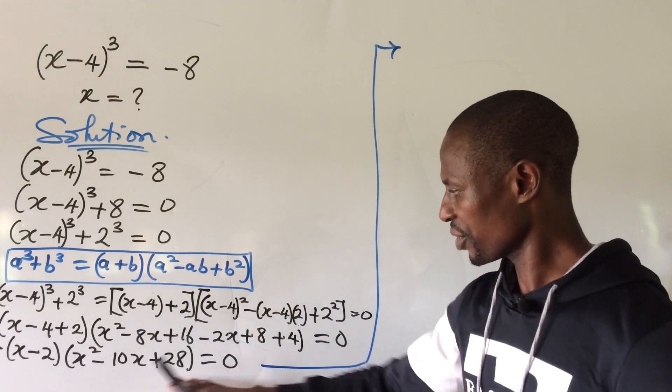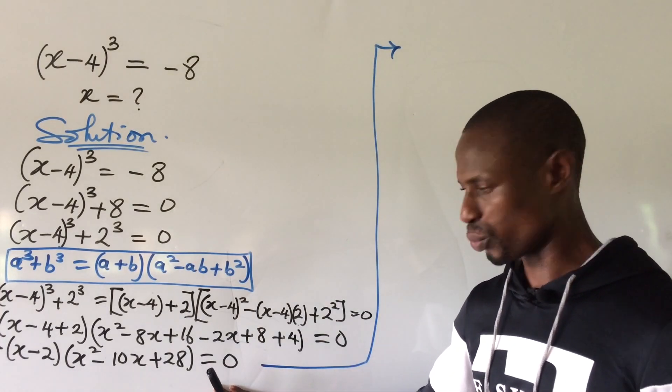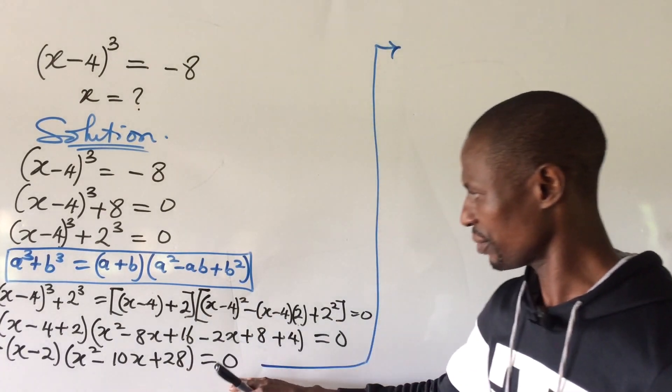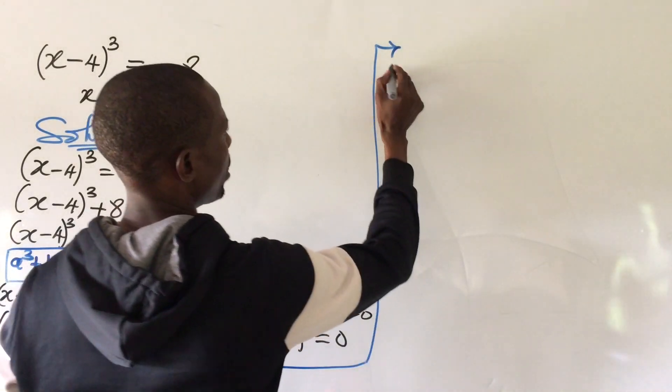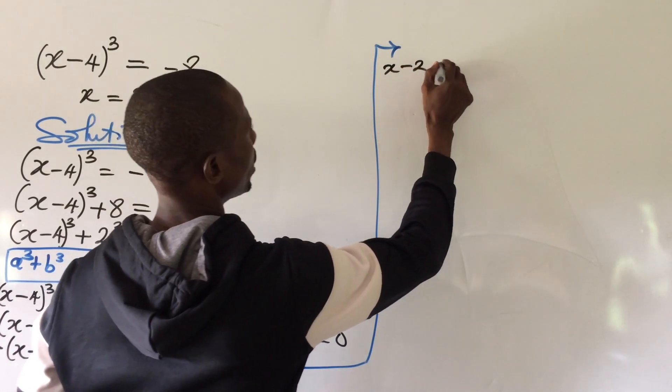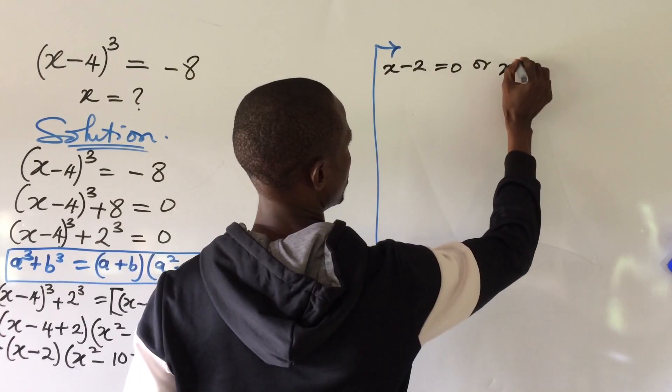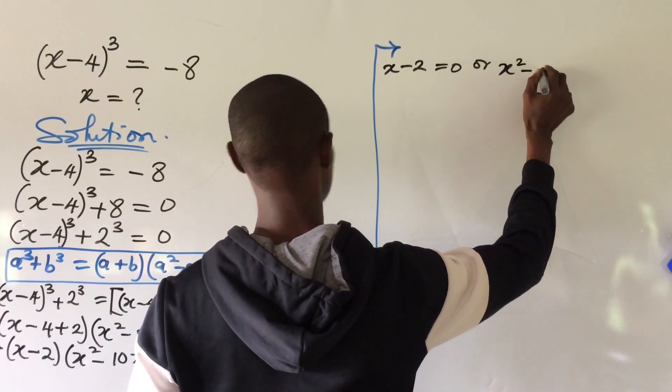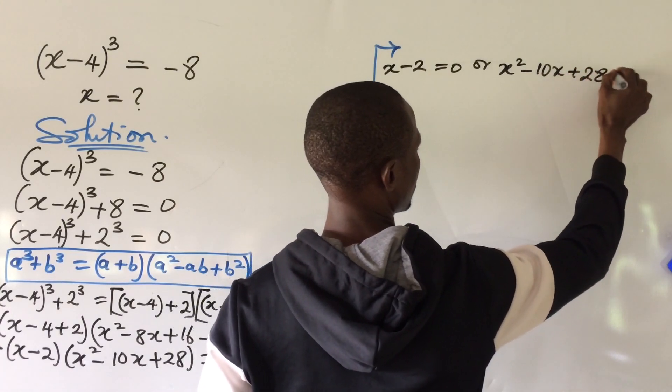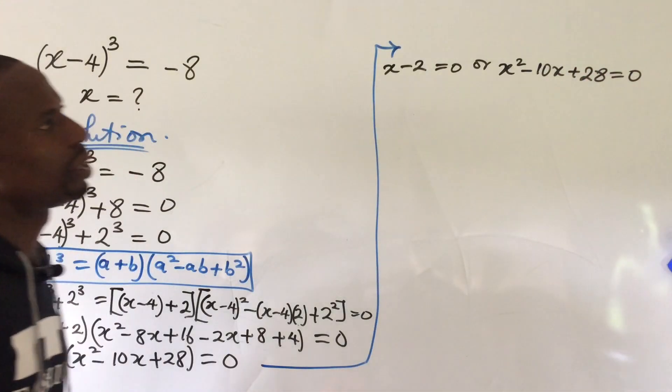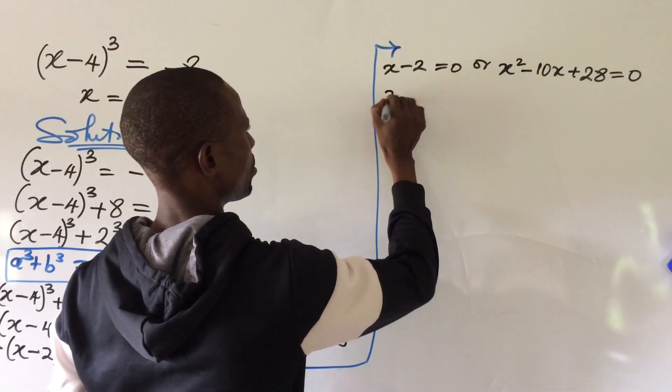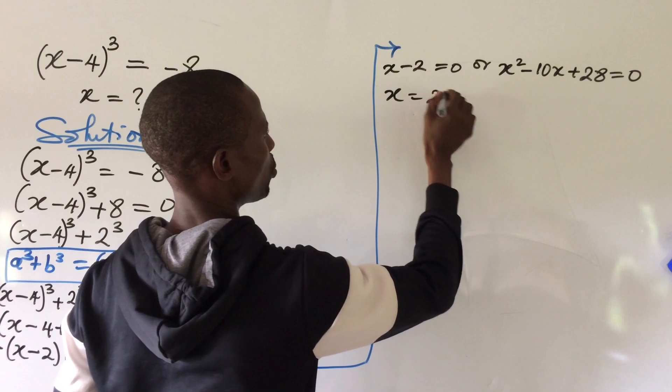Okay, let's proceed. So from this expression here, we can now apply the zero product rule. We equate this to 0 and this to 0. So the first case here, we're going to have x-2 = 0 or x² - 10x + 28 = 0. Now from here, it is easy. So we have x = 2.